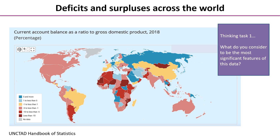Welcome back everyone. I think the most significant features here are actually the imbalances. There are some countries that run very significant current account deficits — those are the countries shown in the darker burgundy shade: Mongolia, Sudan, Niger, Mozambique, to name just a few. And the countries in blue are the current account surplus countries: Saudi Arabia, Germany, Norway, Angola.